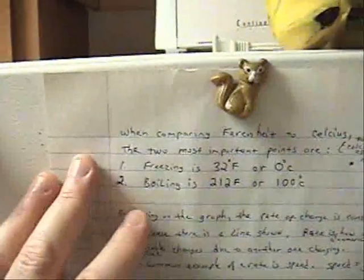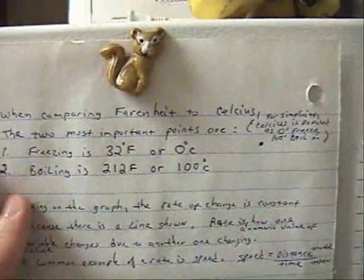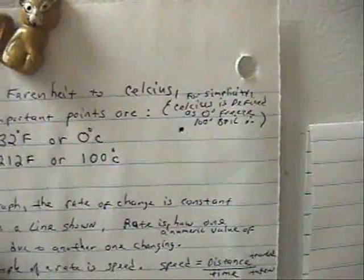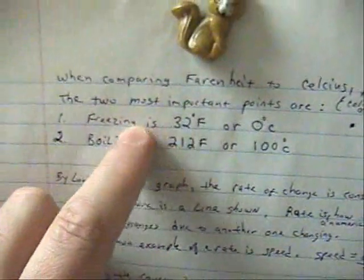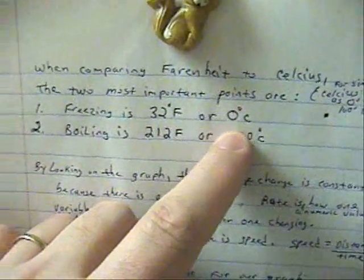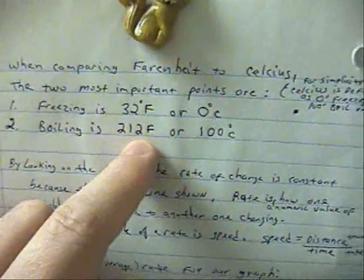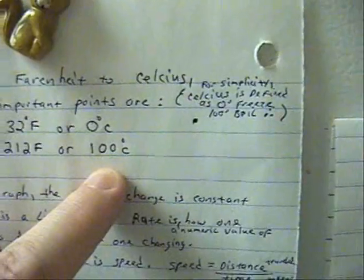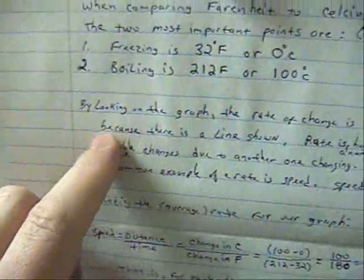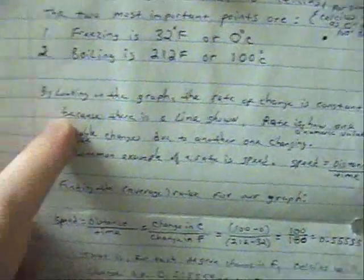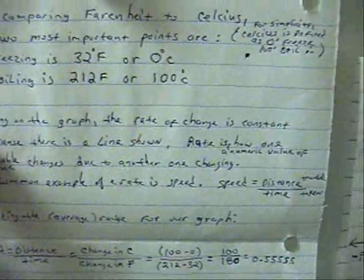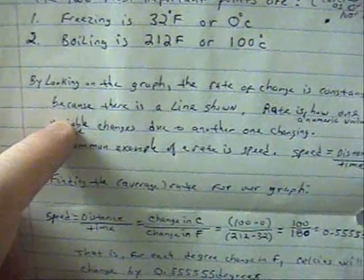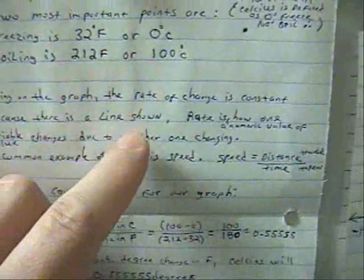Okay, here we have I'm comparing Fahrenheit to Celsius. The two most important points are freezing 32 Fahrenheit or 0 degrees Celsius, boiling 212 Fahrenheit or 100 degrees Celsius. By looking at the graph, the rate of change is constant because there's a line shown.